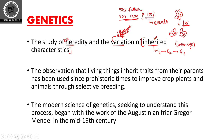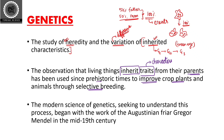The observation that living things inherit traits — that is, characters — from their parents has been used since prehistoric times to improve crop plants and animals through selective breeding. So the concept of genetics is not new. We have used this process for crop plants and animals for selective breeding, but for humans we were not fully aware of it. Modern science of genetics seeks to understand this process for humans.